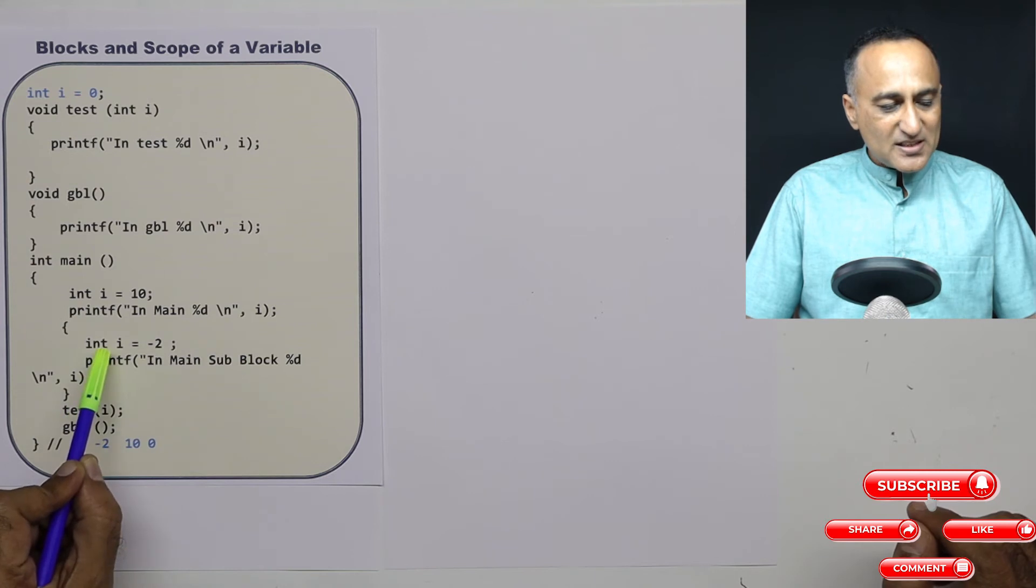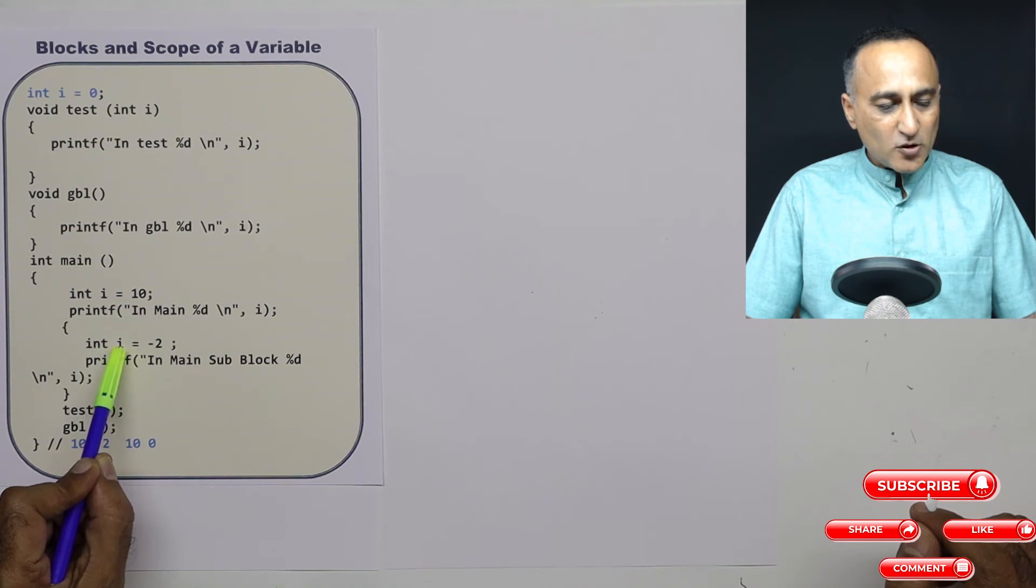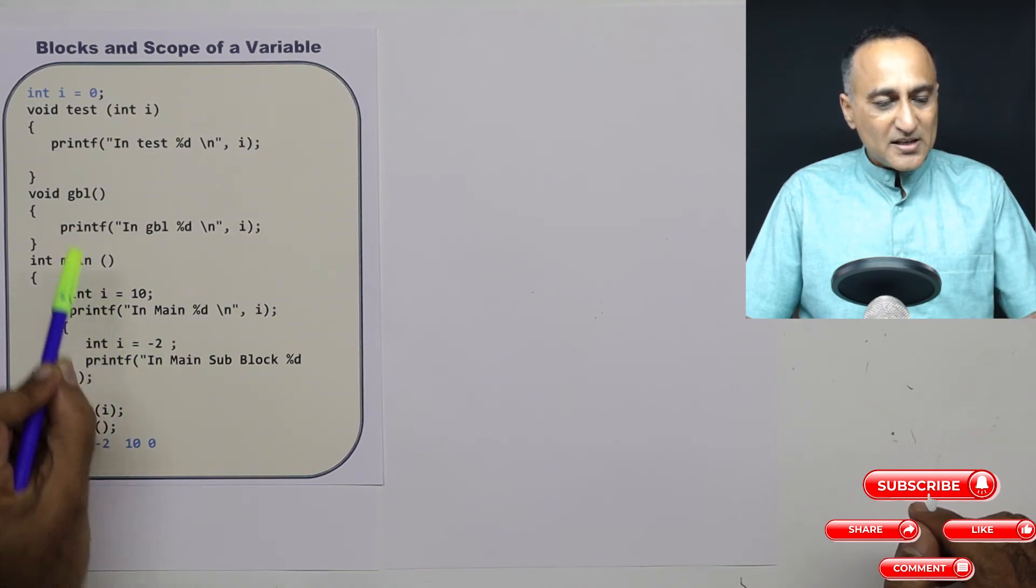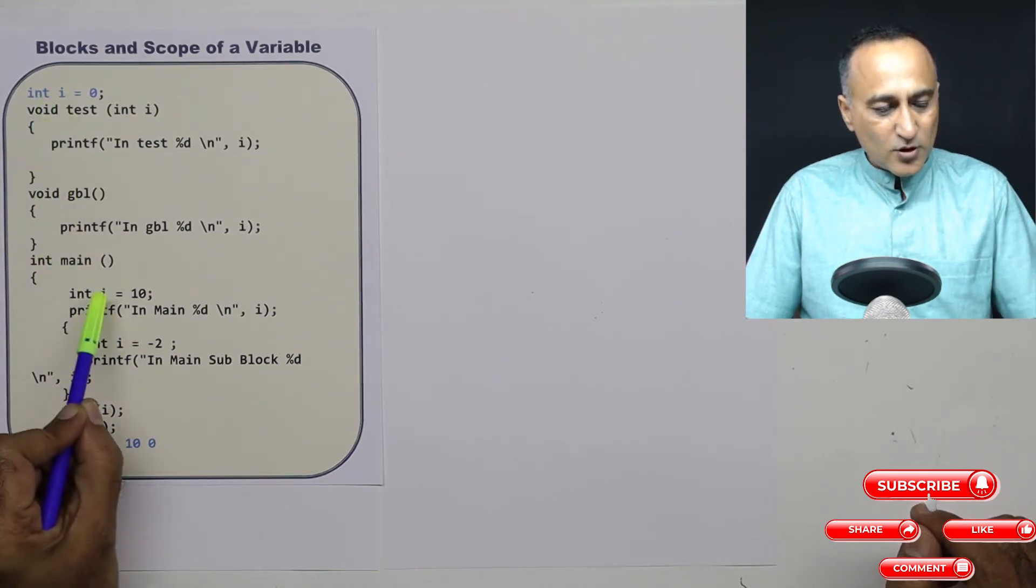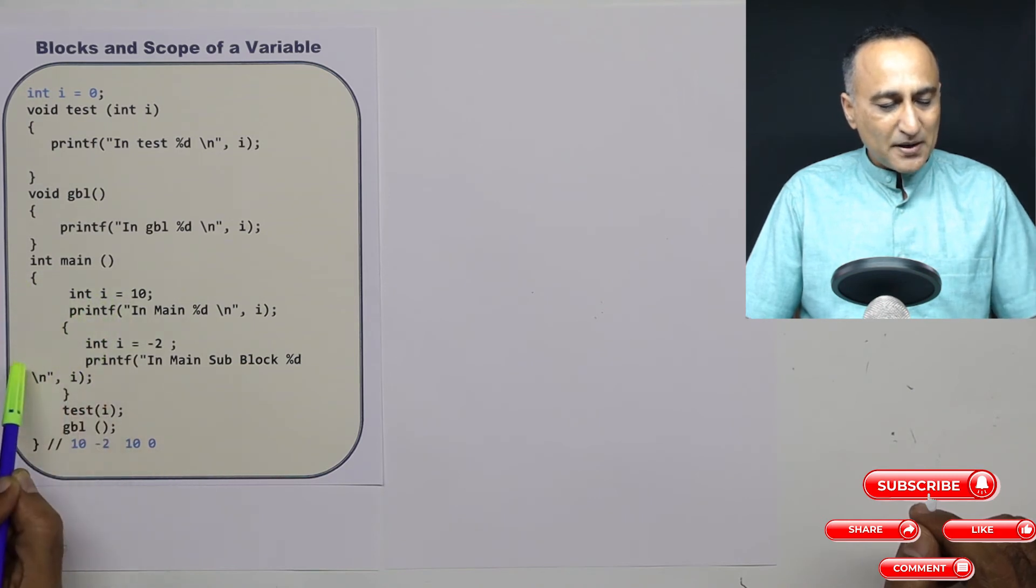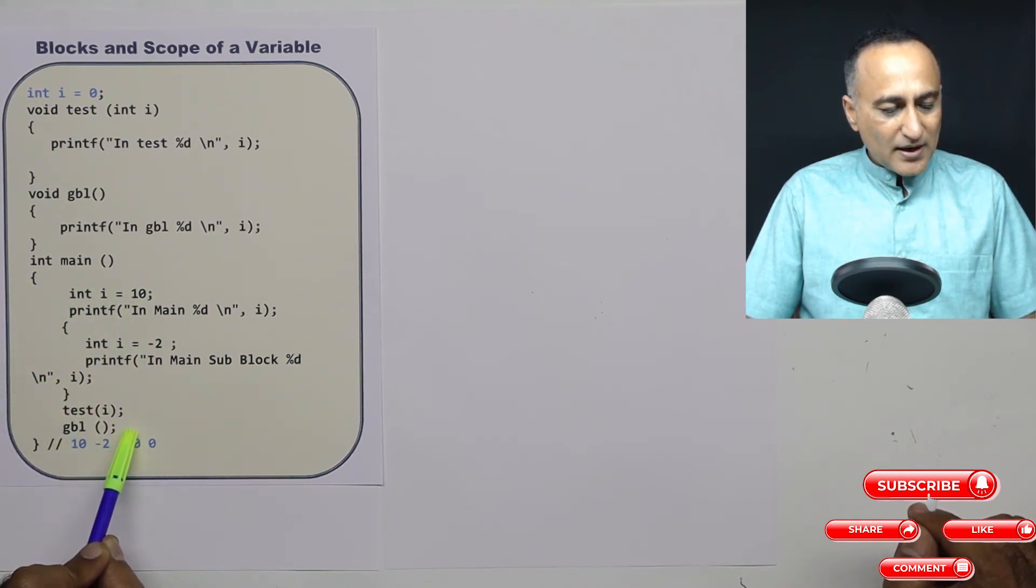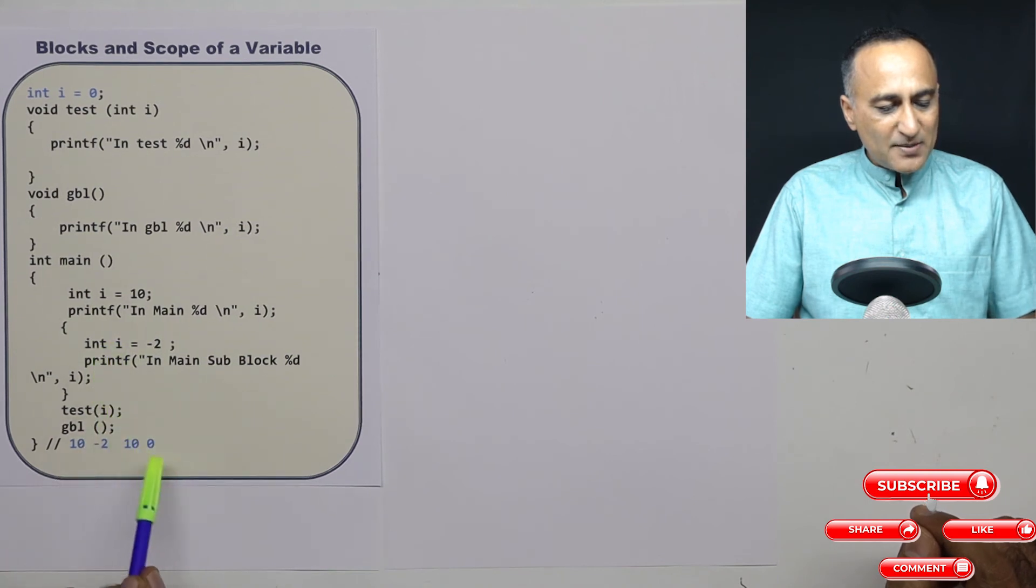So what happens is the variable declared with the same name in the block has higher preference or higher scope than this fellow. Similarly, this i has lower scope than this i in main. Now if I come out and print the value of i, it would have again printed 10 at the end of it.